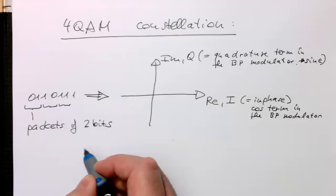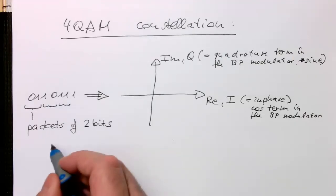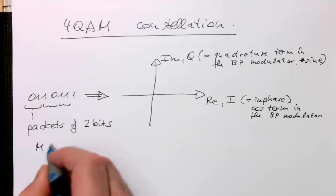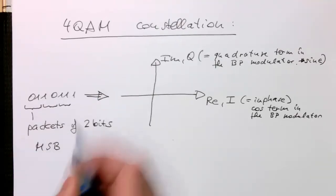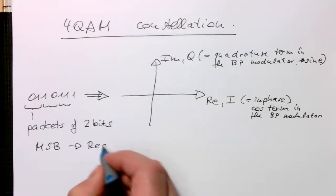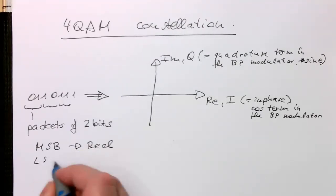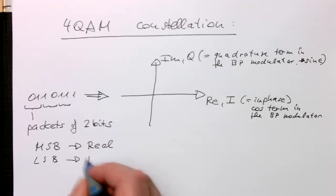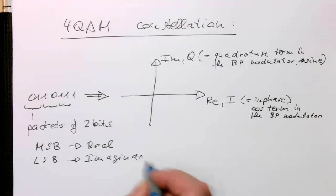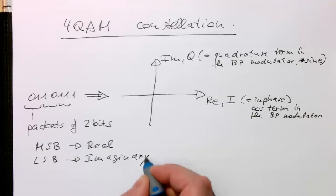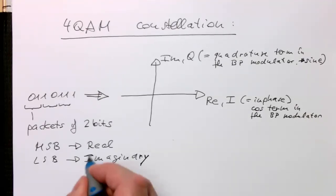And then we do the following: basically the MSB of this one here turns into the real part, and the LSB turns into the imaginary. Might have done this in the introduction the other way around. Obviously it doesn't matter really, but that's the convention here.